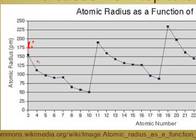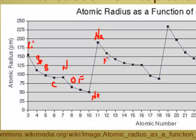Starting in period two: lithium, beryllium, boron, carbon, nitrogen, oxygen, fluorine, and neon — neon is the smallest in that period. When we hit sodium, it suddenly gets larger because sodium has a third energy level added. Then we continue: sodium, magnesium, aluminum, silicon, phosphorus, sulfur, chlorine, and argon. After argon, which is the smallest in its period, we move to the fourth energy level with potassium. The trend goes down in size across each period and resets larger at each new group.